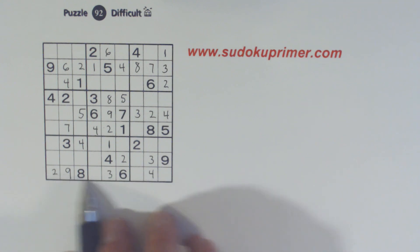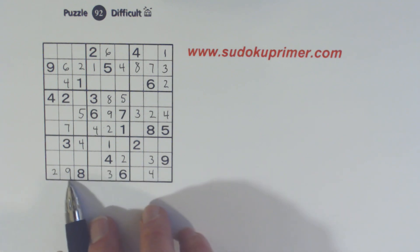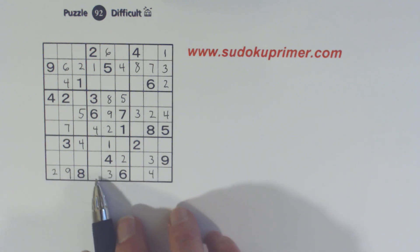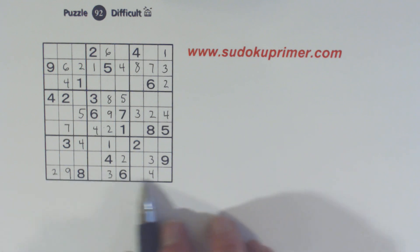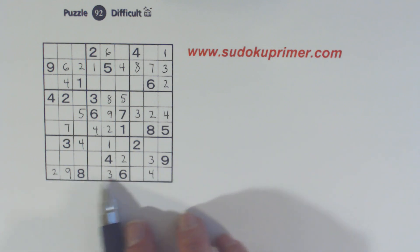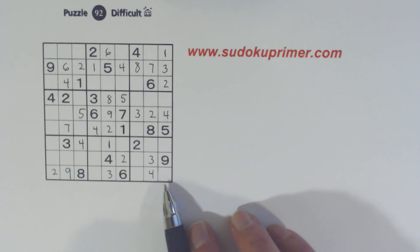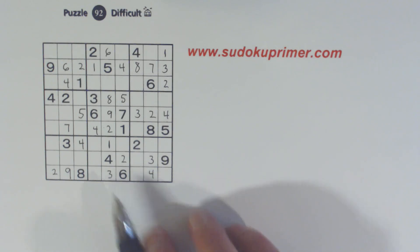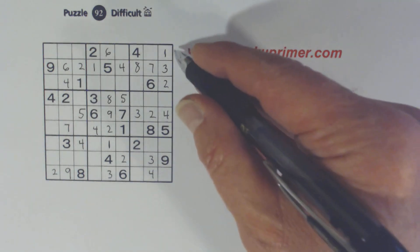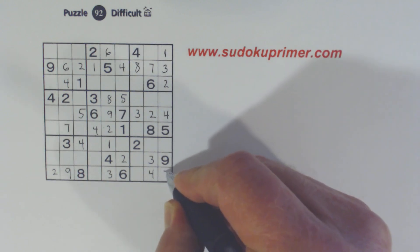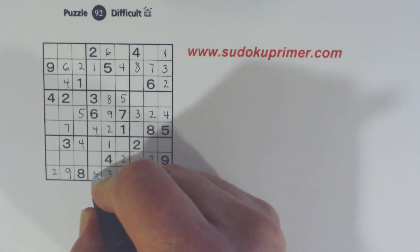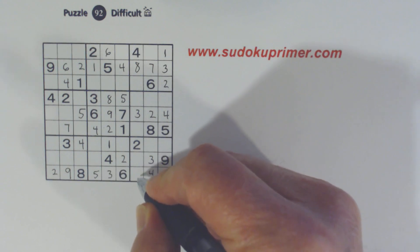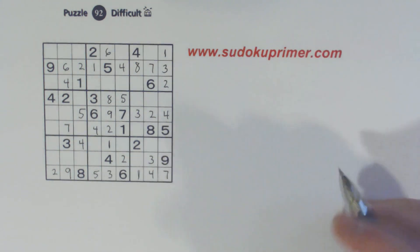Now let's look at row 9 — we're missing 1, 5, and 7. Here's a 1 and a 5, so that's a 7. So that's a 5 and that's a 1 right there.